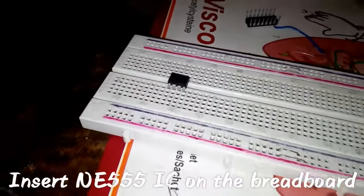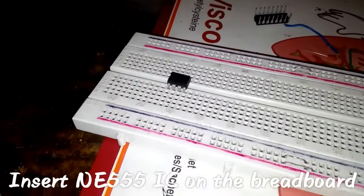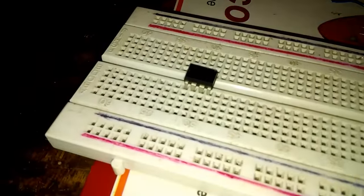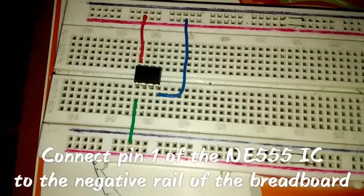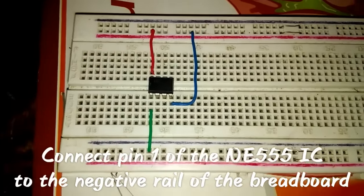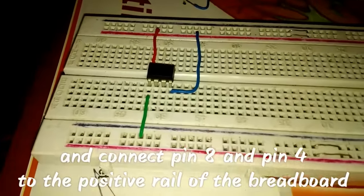Start by inserting the NE555 IC on the breadboard. Connect pin 1 of the 555 IC to the negative rail of the breadboard and connect pin 8 and pin 4 to the positive rail of the breadboard.